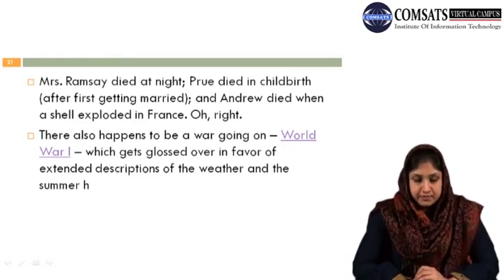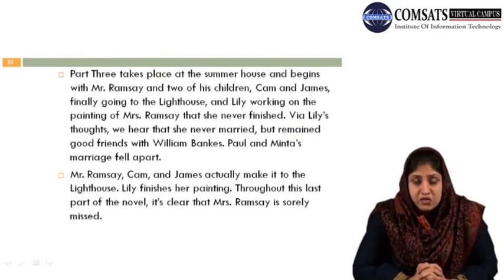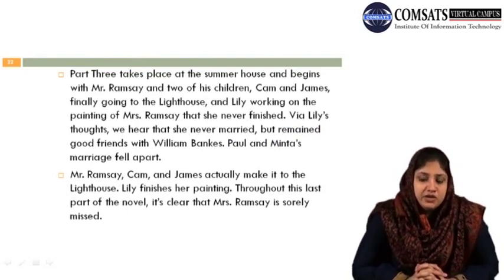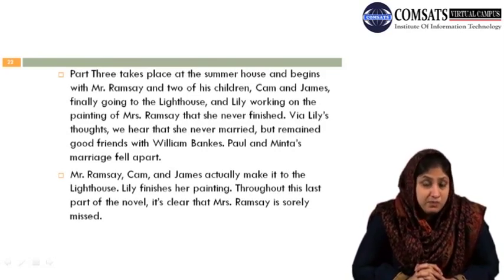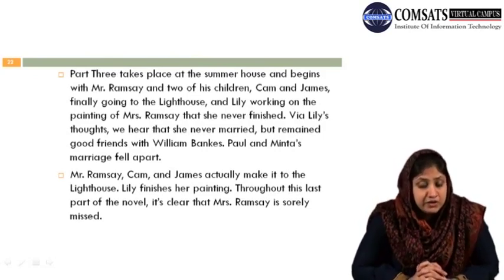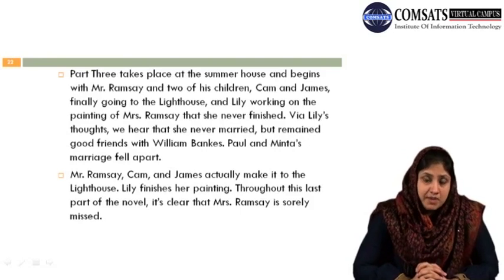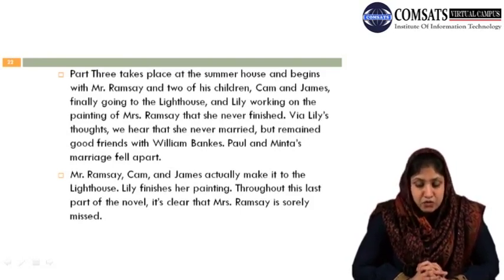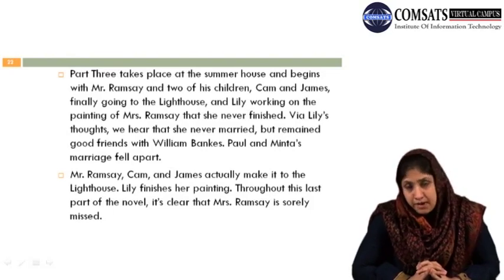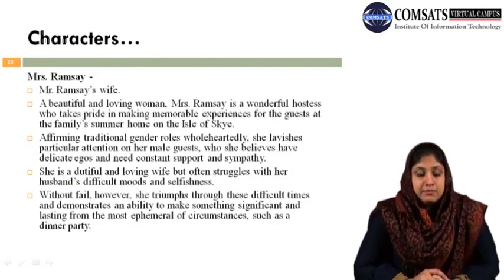Part Three takes place at the summer house and begins with Mr. Ramsay and two of his children, Cam and James, finally going to the lighthouse, while Lily works on the painting of Mrs. Ramsay that she never finished. We hear that Lily never married but remained good friends with William Banks. Paul and Minta's marriage fell apart. Mr. Ramsay, Cam, and James actually make it to the lighthouse. Lily finishes her painting. Throughout this last part it is clear that Mrs. Ramsay is sorely missed by the family members.